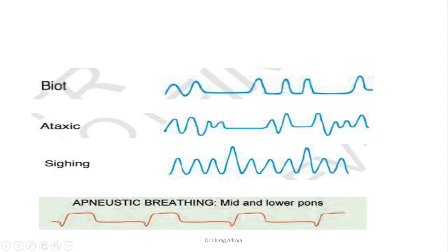Biot's breathing: shallow breathing with periods of apnea in between — seen in meningitis. Ataxic breathing: shallow breathing, deep breathing, and apnea all occurring individually with no pattern — seen in medullary injury.